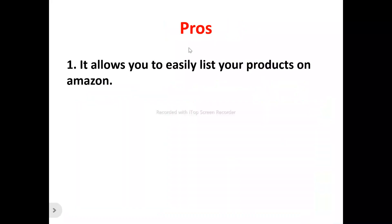Number one: ScanLister allows you to easily list your products on Amazon without stress. ScanLister helps you seamlessly list all your products — books, media, or any other items. It allows you to list your merchant-fulfilled or FBA products, and it supports multiple Amazon marketplaces including the UK, US, Canada, and many other regions. It saves you hundreds of hours by scanning and listing your items.